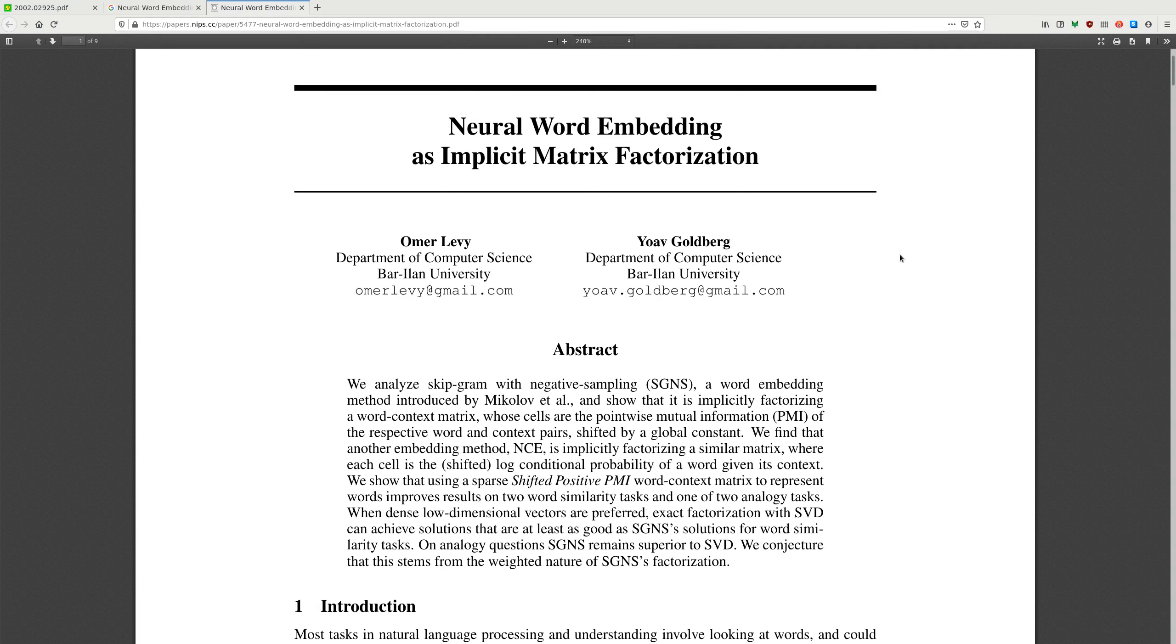Abstract: We analyze skip-gram with negative sampling, SGNS, a word embedding method introduced by Mikolov et al., and show that it's implicitly factorizing a word context matrix, whose cells are pointwise mutual information of respective word and context pairs, shifted by a global constant.